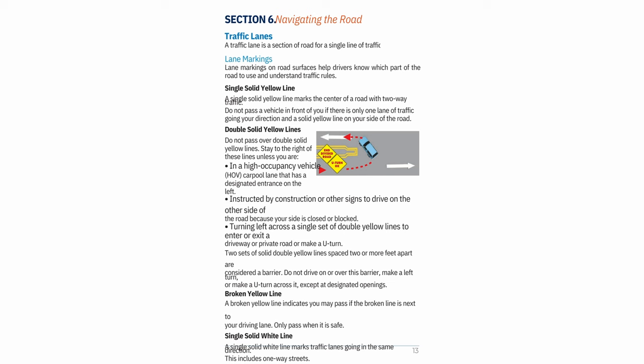Double solid yellow lines: Do not pass over double solid yellow lines. Stay to the right of these lines unless you are in a high-occupancy vehicle (HOV)/carpool lane with a designated entrance on the left, instructed by construction or other signs to drive on the other side, or turning left across a single set of double yellow lines to enter or exit a driveway, private road, or make a U-turn. Two sets of solid double yellow lines spaced two or more feet apart are considered a barrier.